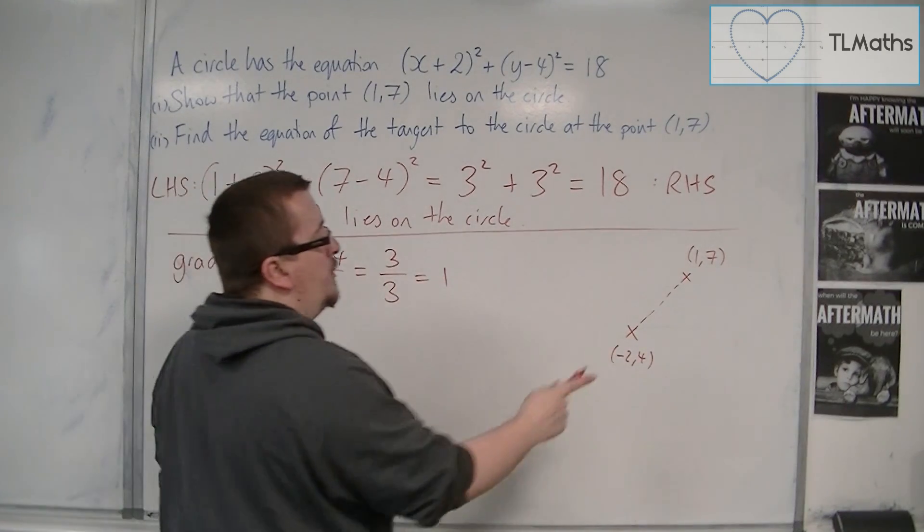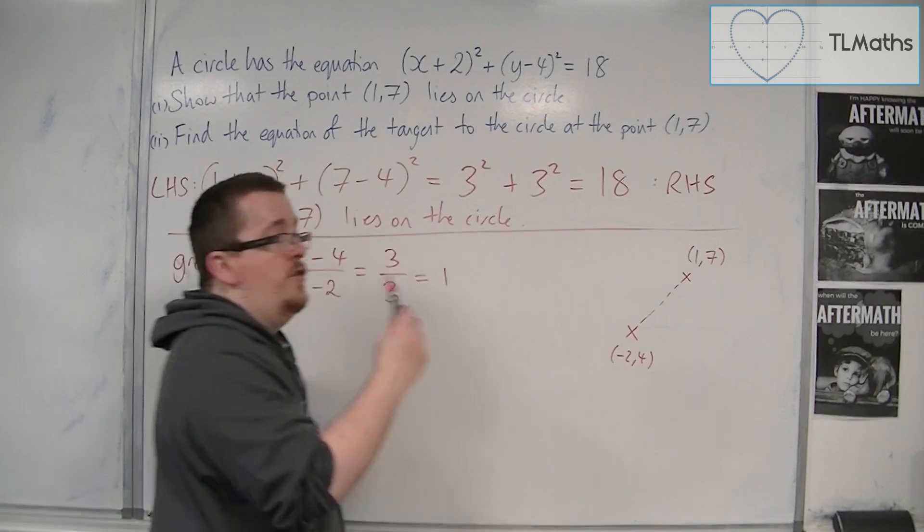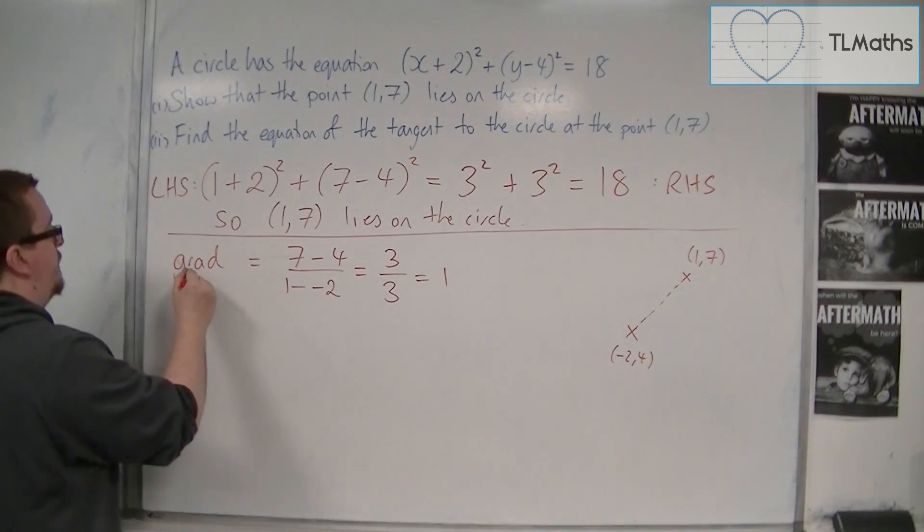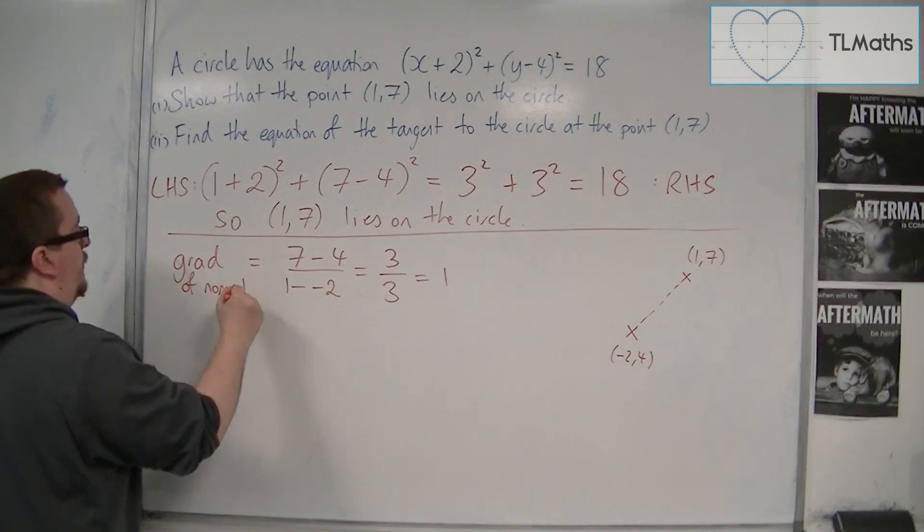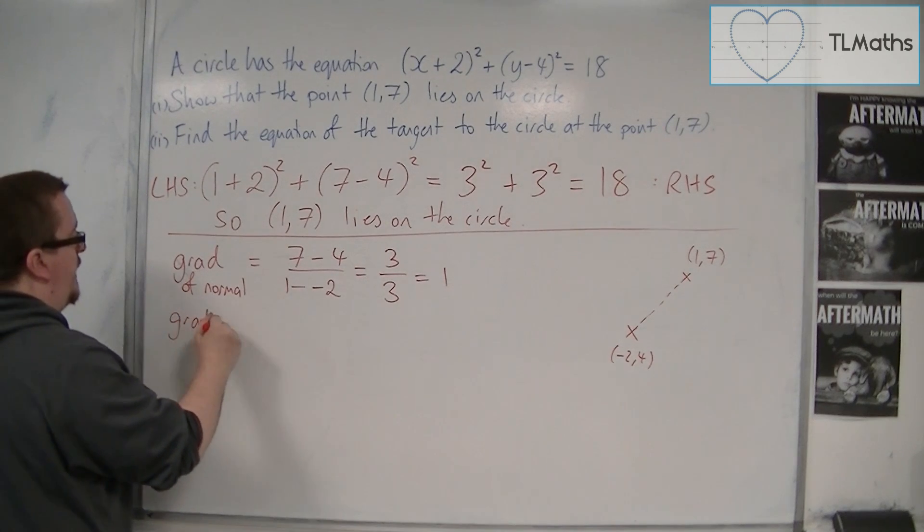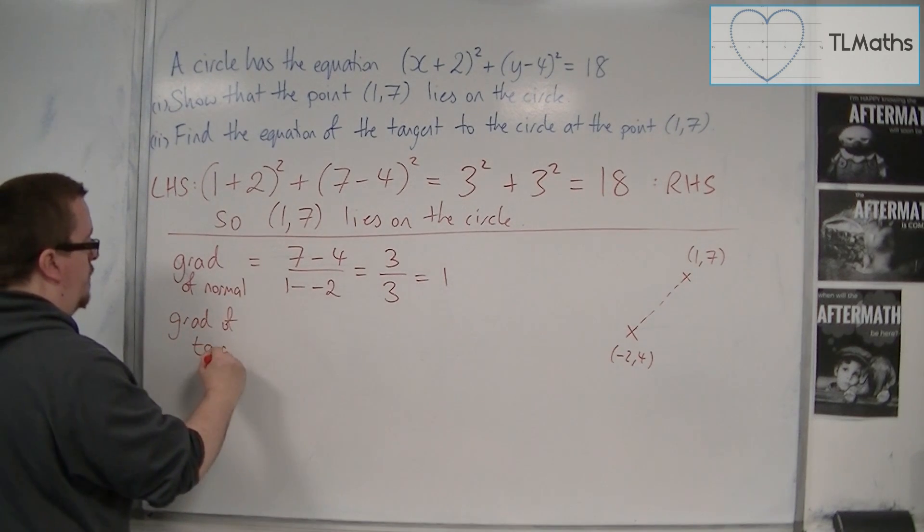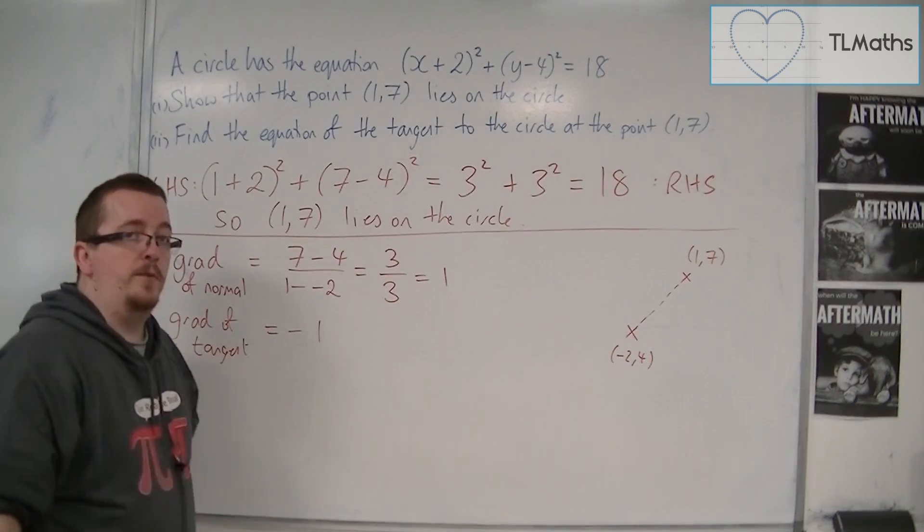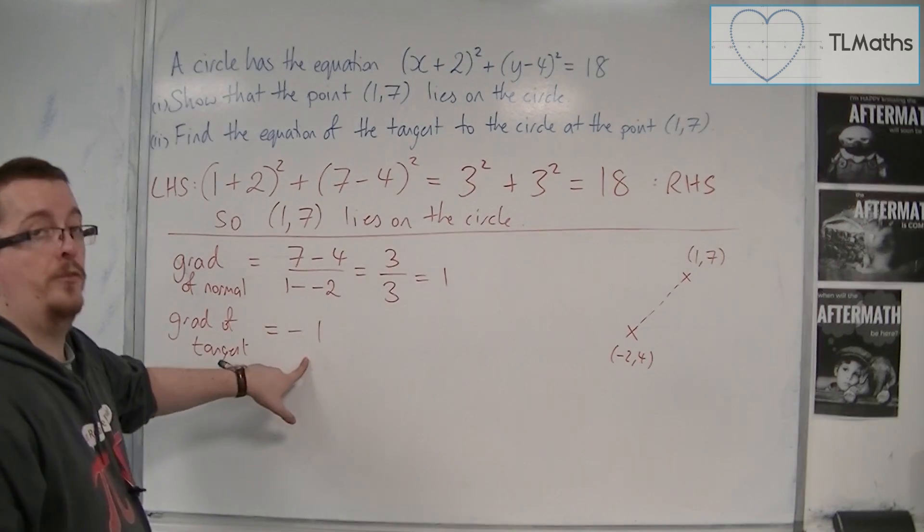Now that is actually the gradient of the normal, not the gradient of the tangent. So we need to find the gradient of the tangent by using the negative reciprocal. And so the negative reciprocal of 1 is -1.